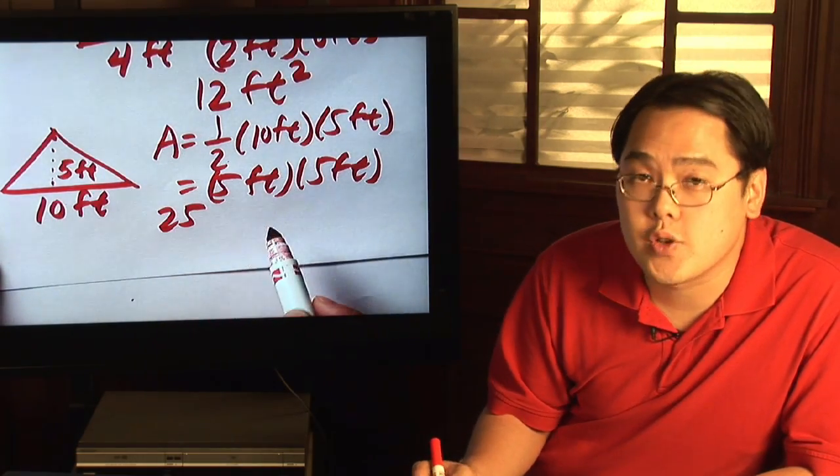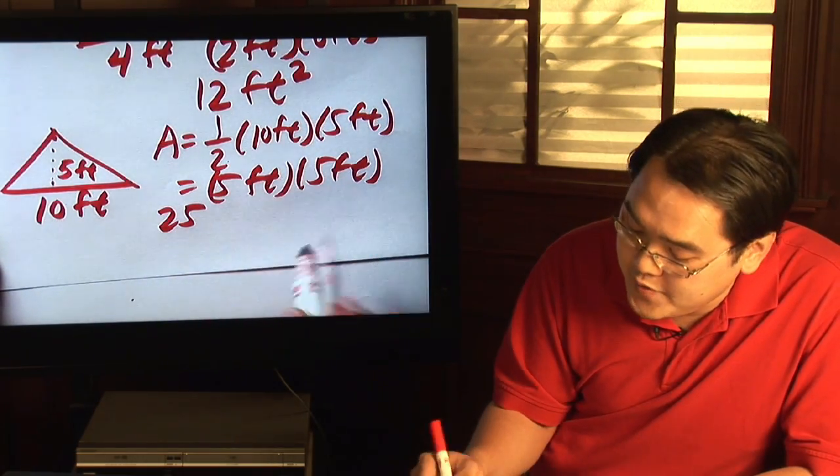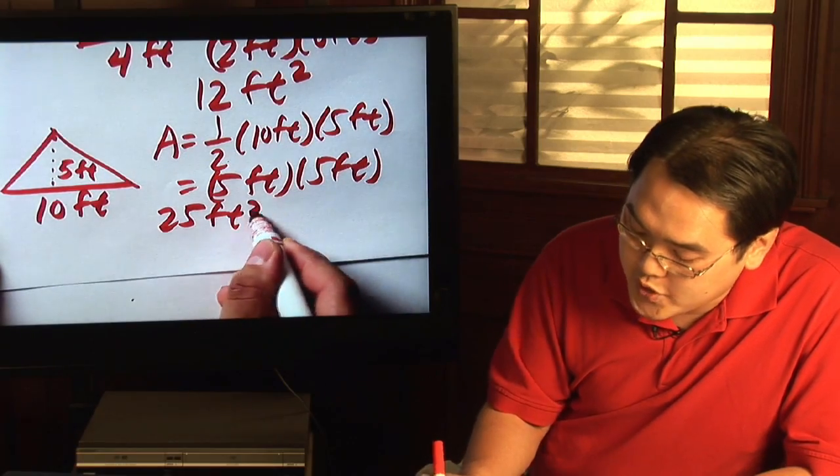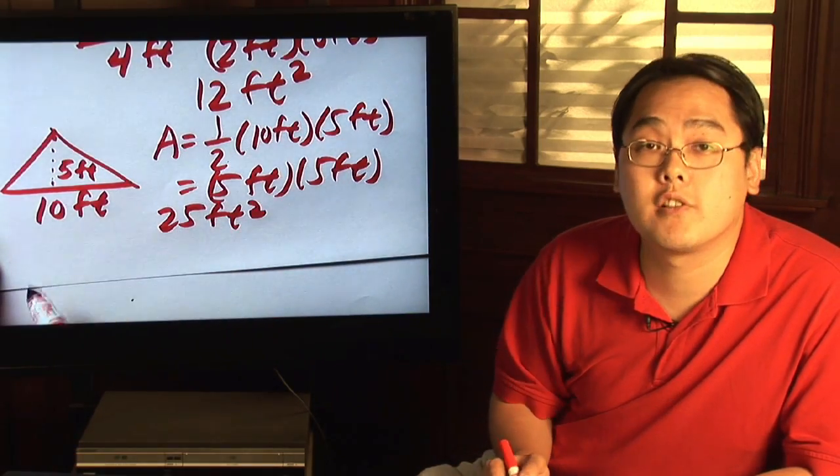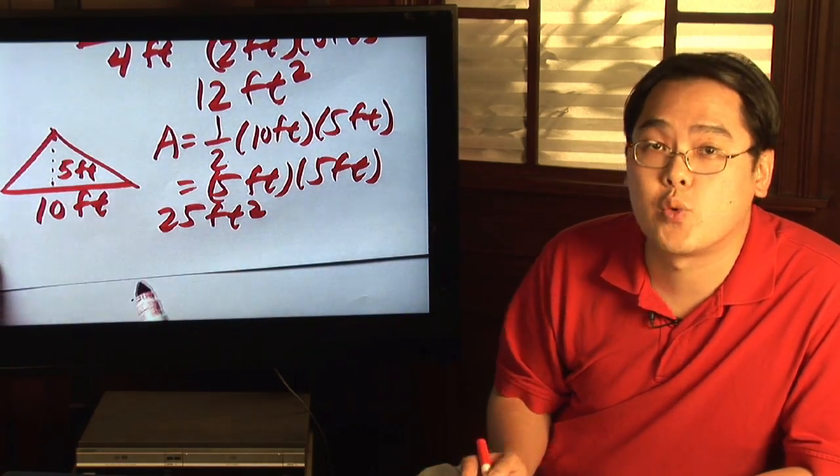but always multiply the feet so you have the correct units. Feet times feet is feet squared or square feet. So the area of this particular triangle that's not a right triangle is twenty-five square feet.